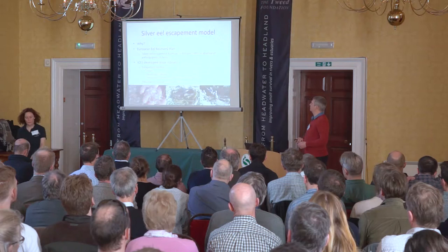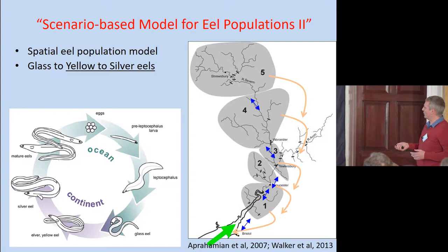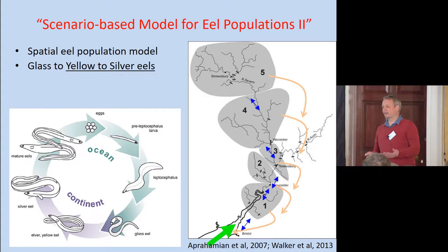Just to explain what I'm going to talk about, if anyone doesn't understand the full life cycle of the eel: I'm going to be talking about the glass eels, which are effectively the recruits — the eggs of the salmon. The yellow eel, which is the freshwater resident stage — think of that as your fry and your parr. And the silver eel as the seawater migrant — think of that as the smolt.